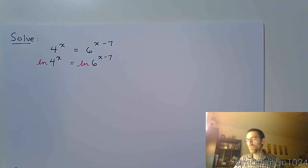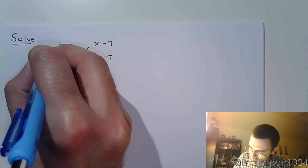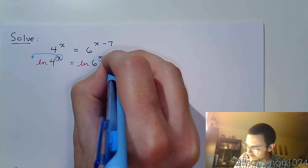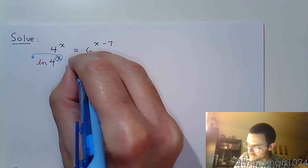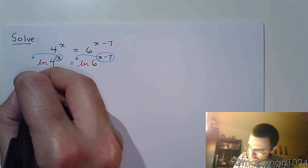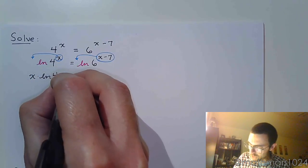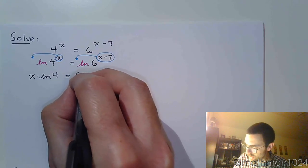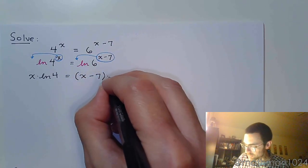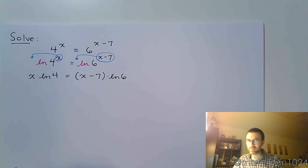And the way you know to use logarithms is when you have your variables in the powers and you can't come up with a common base, because now this x is going to come out in front, and over here the x minus 7 is going to come out in front by using that property of logarithms. So we get x times the natural log of 4 equals, don't forget your parentheses, (x-7) times the natural log of 6.